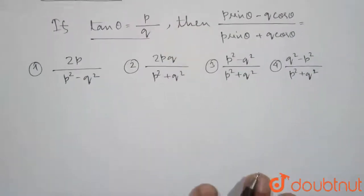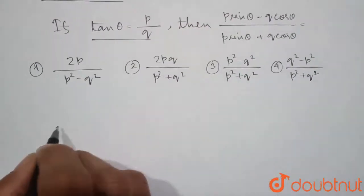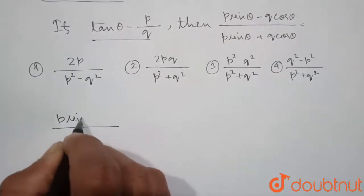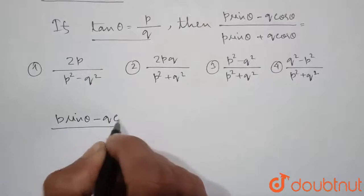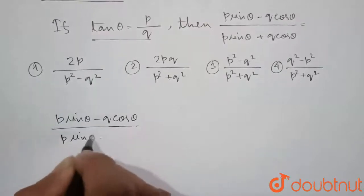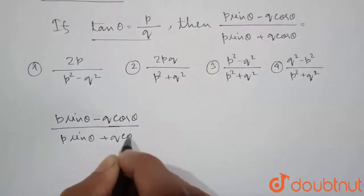So, how we will do this? Let us write the given expression. So, it is p sin theta minus q cos theta divided by p sin theta plus q cos theta.